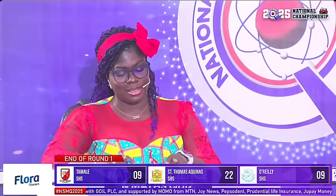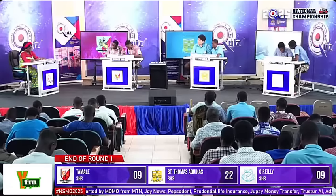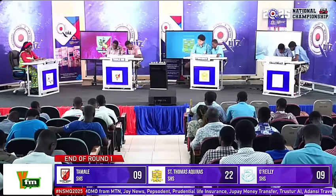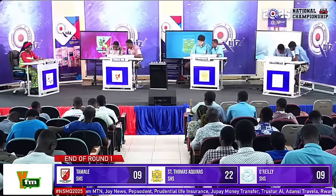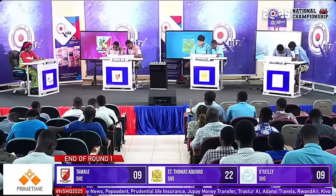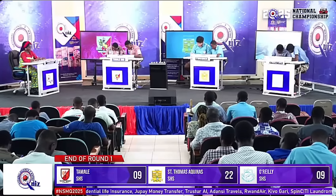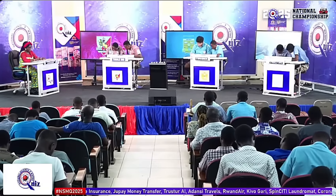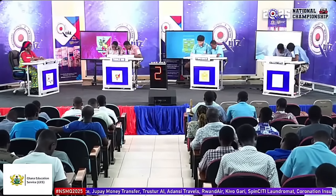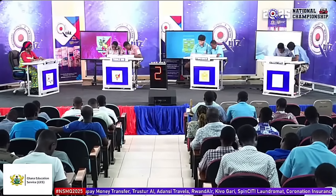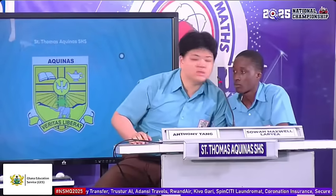Question one. For 30 seconds, find the arithmetic mean of 2 millimeters, 3 millimeters, 5 millimeters, 6 millimeters, 9 millimeters, and 17 millimeters. St. Thomas Aquinas: 7 millimeters. Correct.